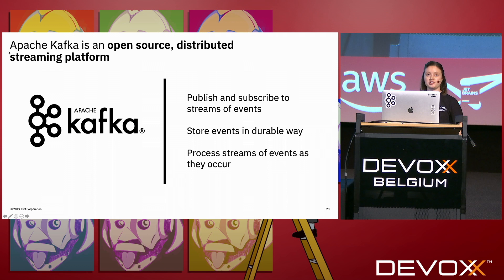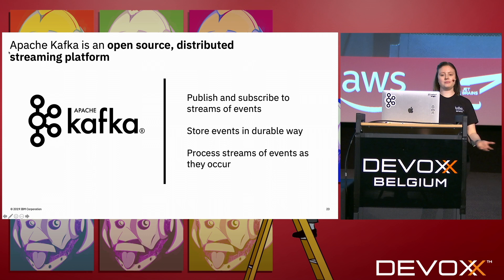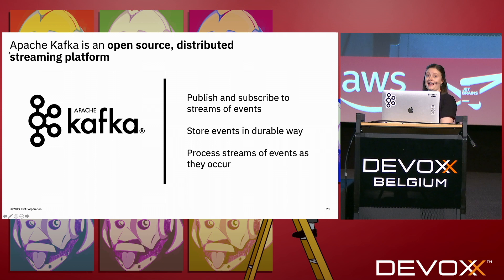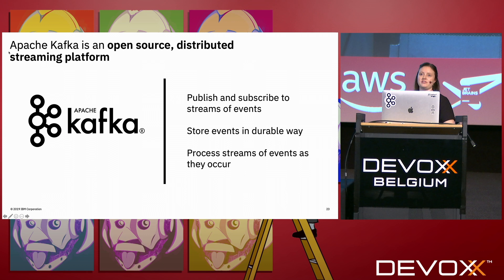Kafka is an open source distributed streaming platform. It offers publish and subscribe to streams of events, allows you to store events durably, and process streams as they occur. It's a really growing ecosystem — becoming the de facto event streaming platform. It's highly configurable, so you can set up Kafka to do whatever suits your use case, but that means there can be a bit of a learning curve when you get started.